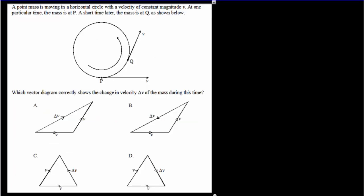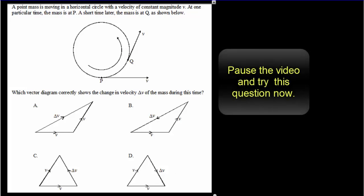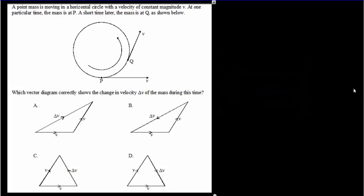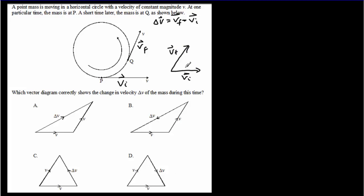Here's the third question. Pause the video, read it over, try it out for yourself, come back for the answer. You've got an initial velocity and a final velocity. To subtract and find delta v — vf minus vi — I can either add the opposite or join the two tails together. With Vi and Vf tail to tail, my resultant goes from Vi to Vf — that's delta v, which is answer c. Notice that delta v is pointing towards the center of the circle.